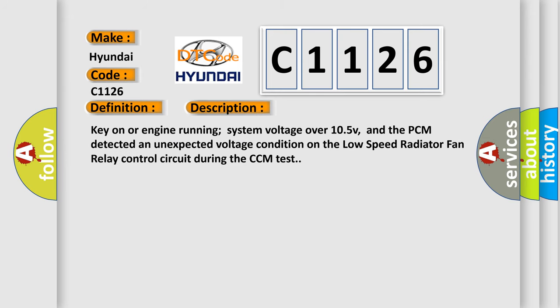And now this is a short description of this DTC code. Key on or engine running, system voltage over 10.5V, and the PCM detected an unexpected voltage condition on the low speed radiator fan relay control circuit during the CCM test.